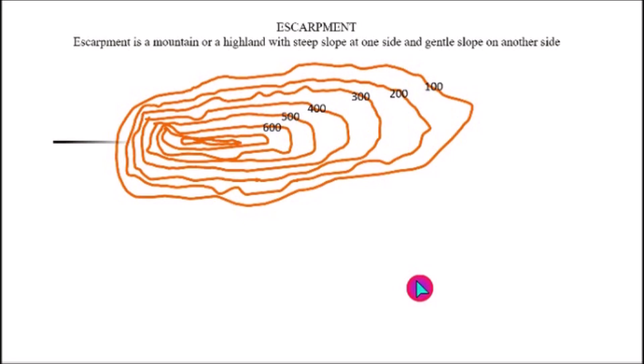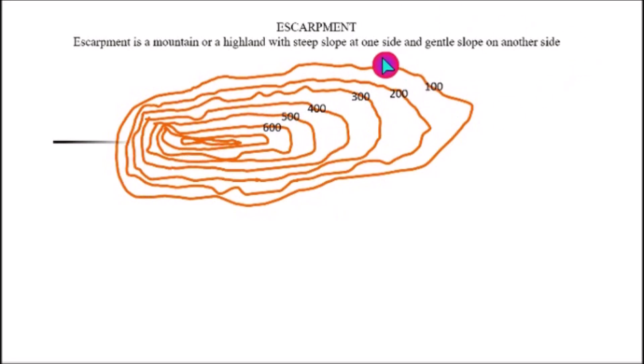As you can see, this mountain has two sides, and that is what makes it an escarpment. One side — this area — is steep because the contour lines are closer together there. The other side is gentle because the contour lines are far apart. Let us use cross-sections to indicate the features of escarpment.